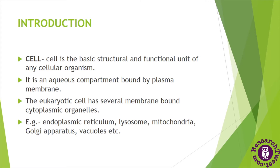The cell is an aqueous compartment bounded by the plasma membrane, also known as the cell membrane. This plasma membrane is a semi-permeable structure which allows transportation of some selective goods. The eukaryotic cell has several membrane-bound cytoplasmic organelles. The fluid-like aqueous structure is called the cytoplasm, and different types of organelles are embedded in this cytoplasm — these are called cytoplasmic organelles.